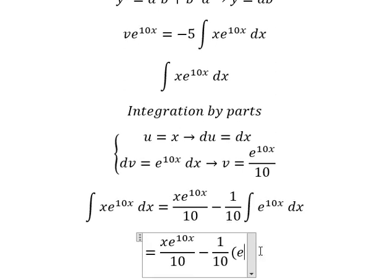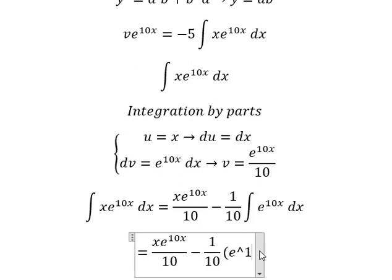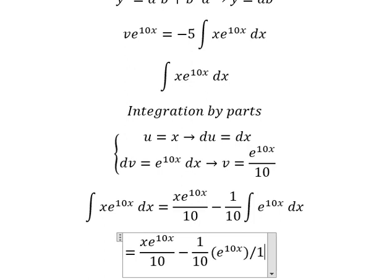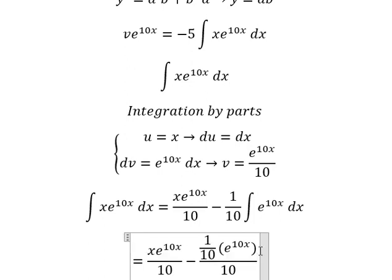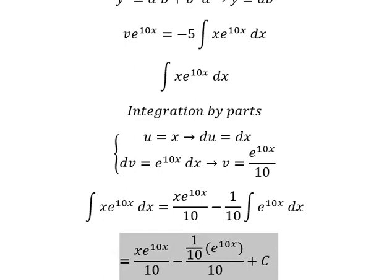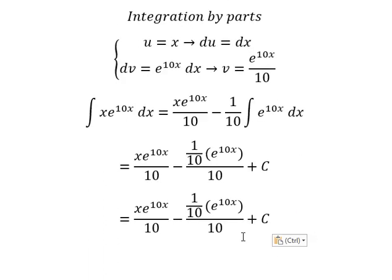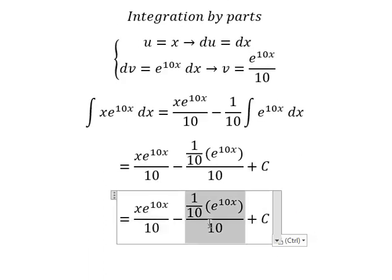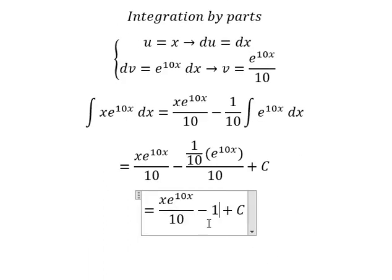We have e to the power of 10x over number 10, and I will add the constant c. So 10 times 10 gives 100.